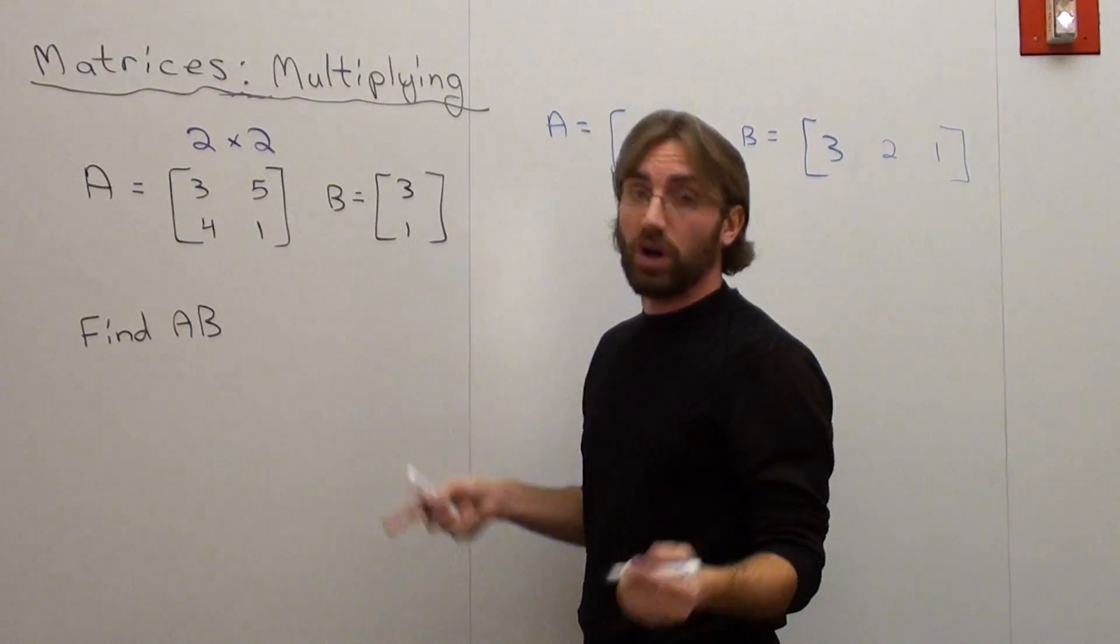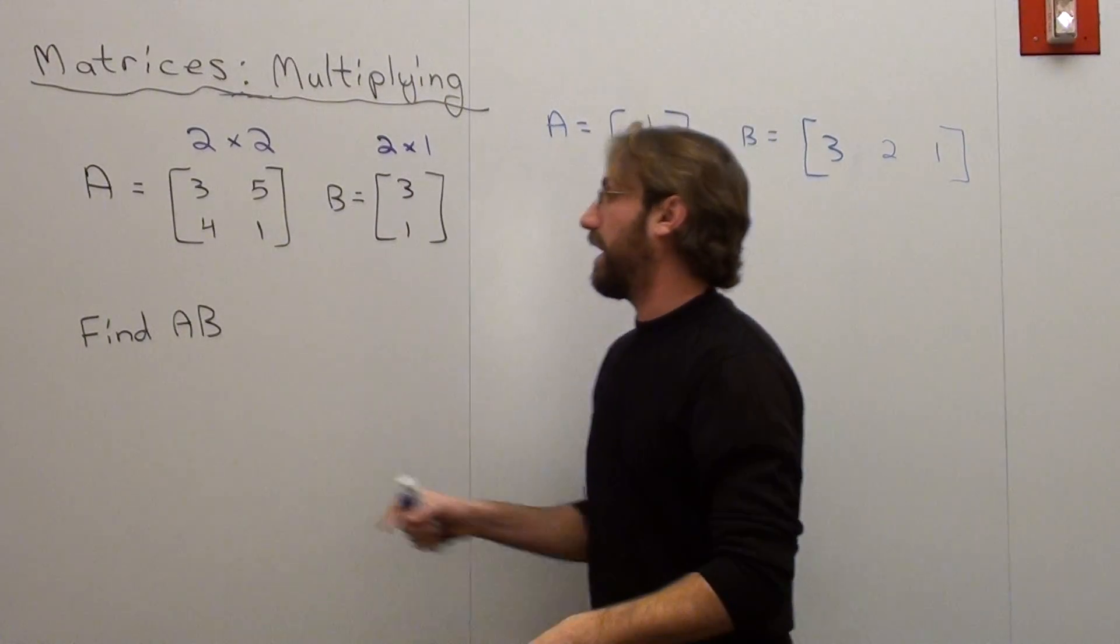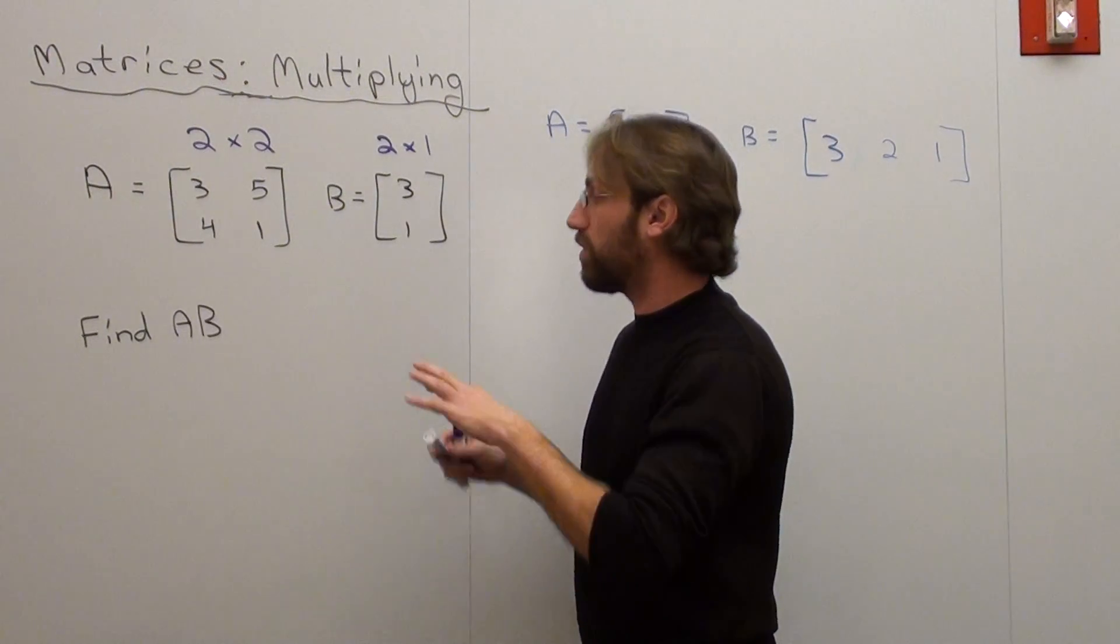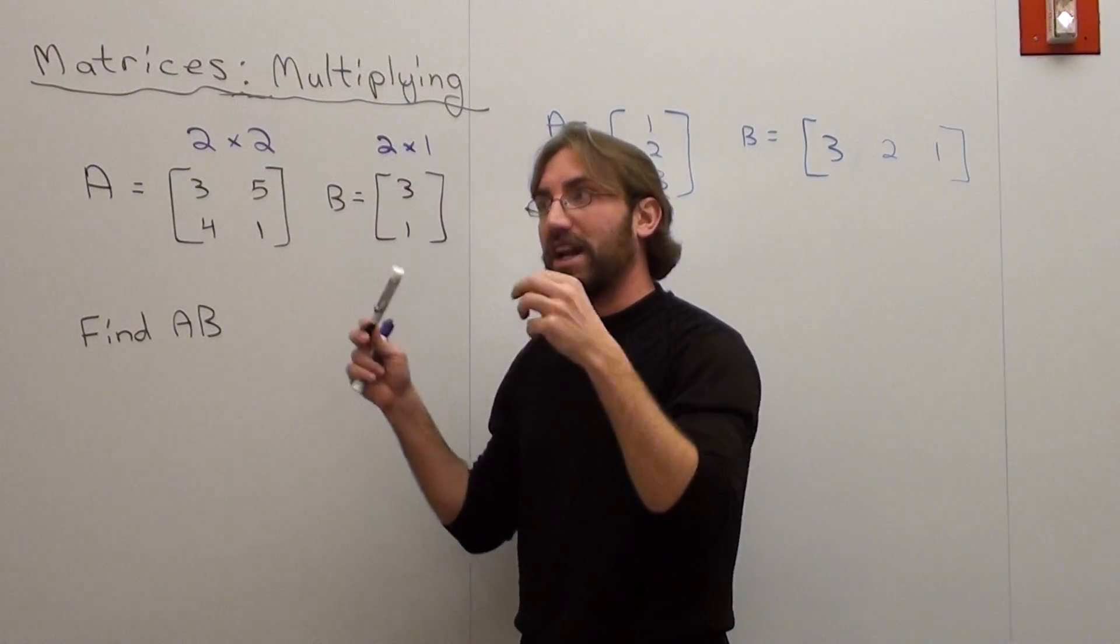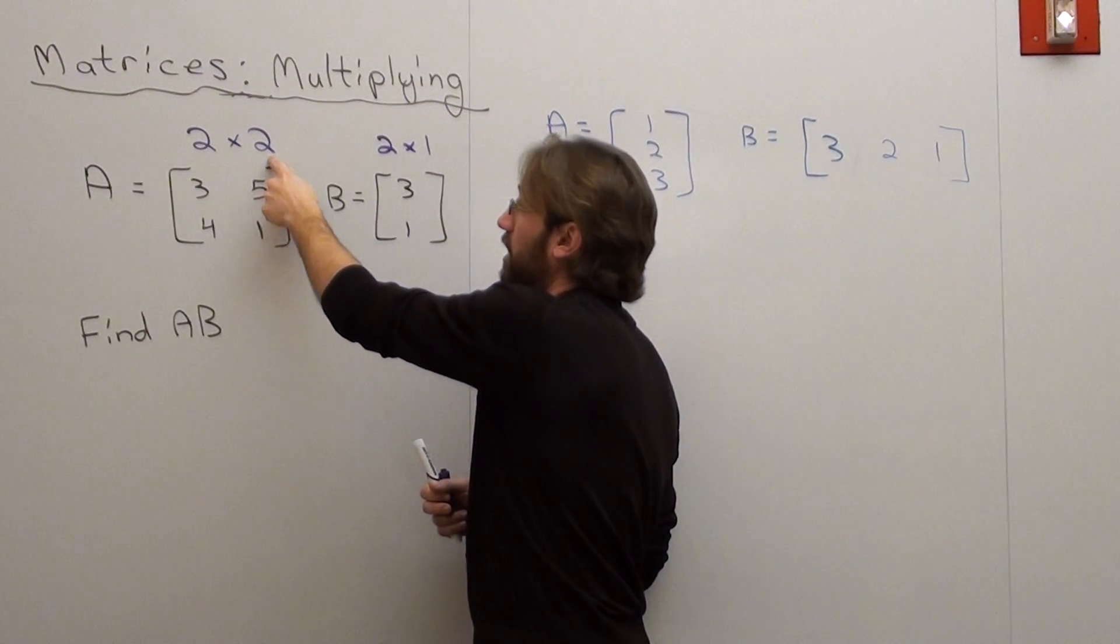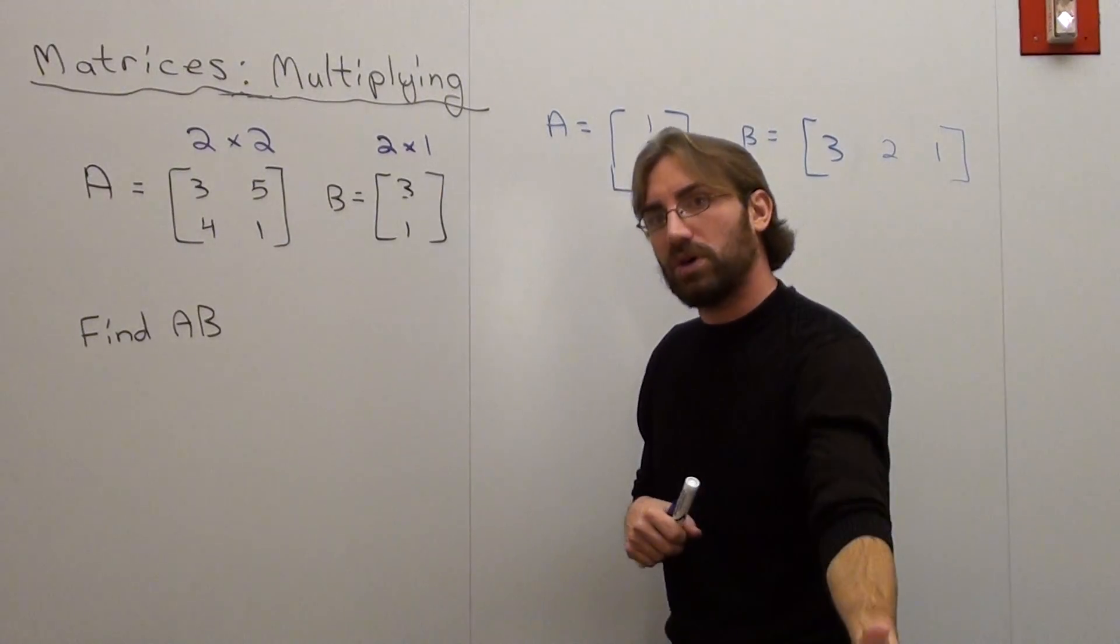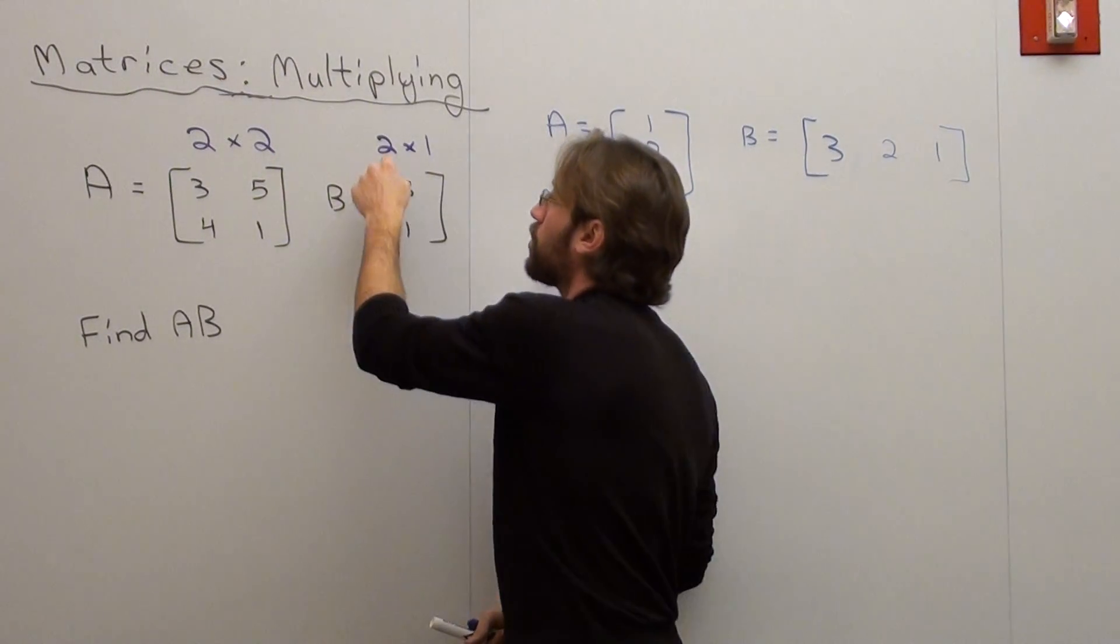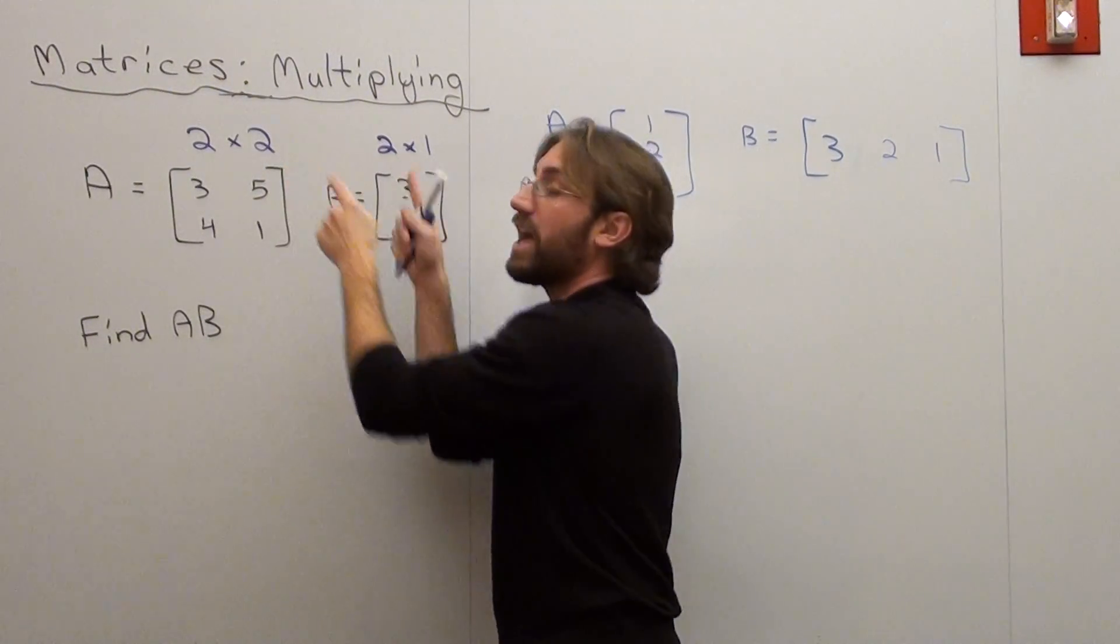B is 2 rows by 1 column. Now, in order to multiply matrices correctly, you put it in the order you have to find it in. So I've got to find A times B. In order for it to work, I've got to check the inside numbers of the matrices. So it's a 2 here, and this is a 2. Don't check the outer 2, just check the inner 2. If they match, it means you can multiply them. If they don't match, then it doesn't work.